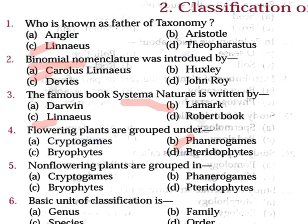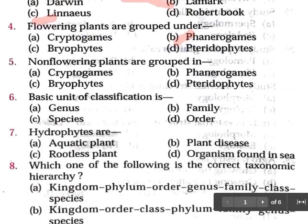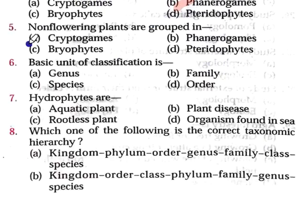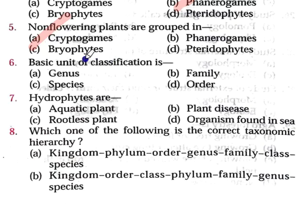Question number 5: Non-flowering plants are grouped under — Option A: Cryptogames, Option B: Phanerogames, Option C: Bryophytes, Option D: Pteridophyta. Option A is correct. Cryptogames are plants with poorly differentiated reproductive structures. These are called cryptogames — they are non-flowering plants.